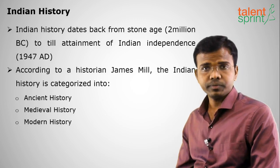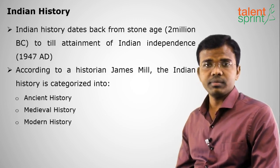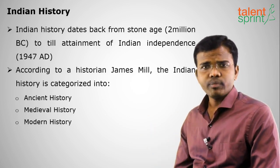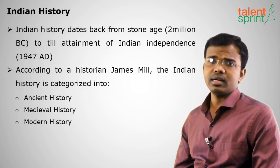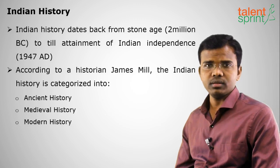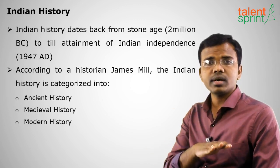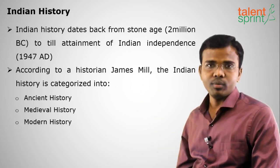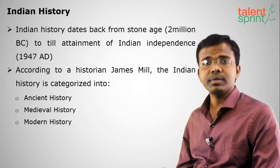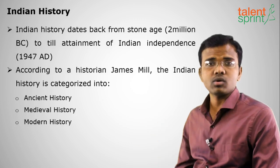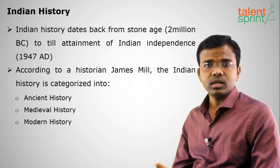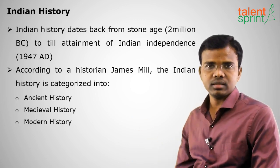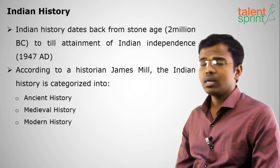Two million BC — one million is 10 lakhs, so that means 20 lakh BC. What is BC and AD? BC stands for Before Christ, and AD stands for Anno Domini — before the birth of Christ and after the birth of Christ. Some people also call it BCE (Before Common Era) and CE (Common Era).